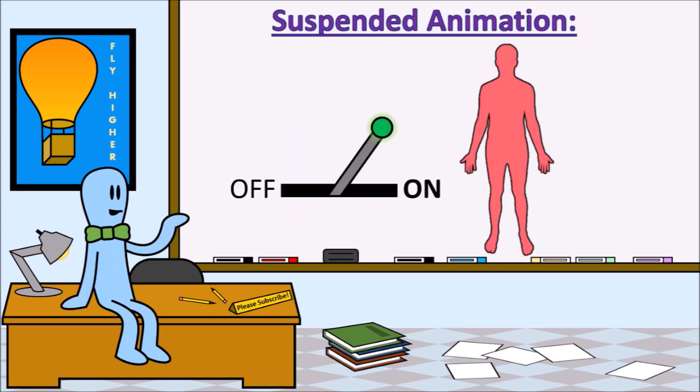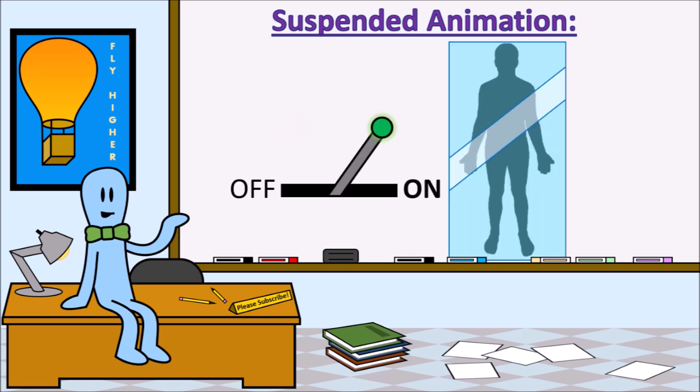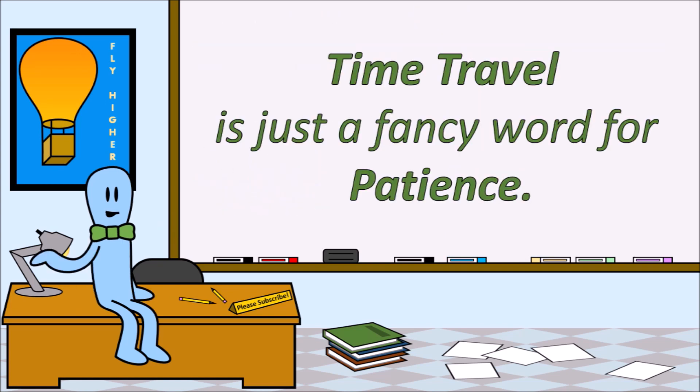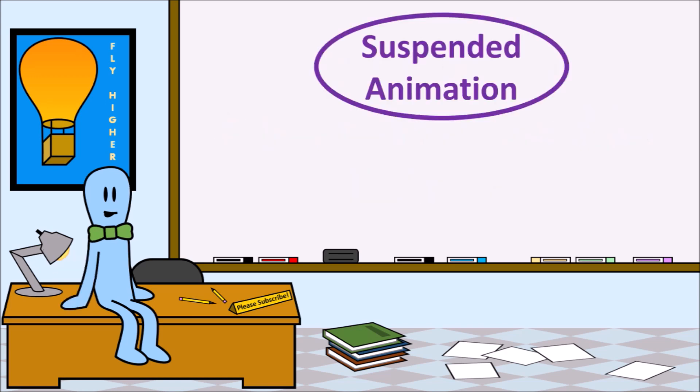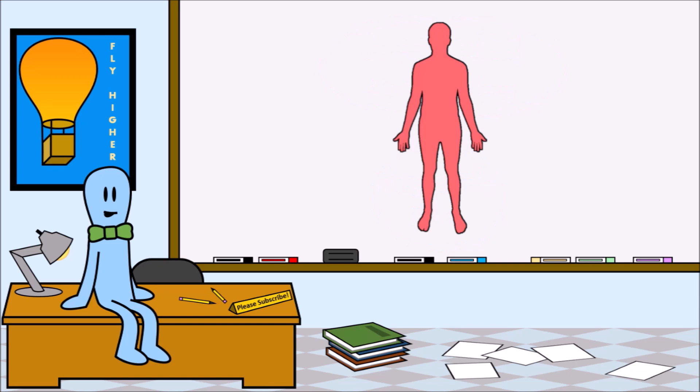Suspended animation is, theoretically, being able to turn off the entire human body and preserve it in a way that it can be turned on safely at any time in the future. So here, instead of warping time to go to the future, we're instead making it possible to wait long enough until it is the future. Suspended animation is the broad term to describe any theoretical way to preserve someone's body in a way that they can be reanimated later.